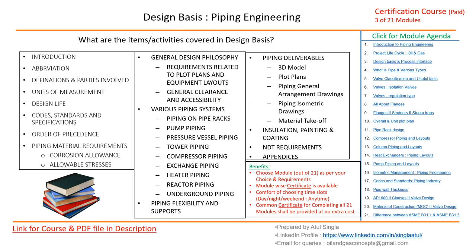General clearances, accessibility, various piping systems — pipe rack, pump piping — and applicable clauses for any process plant will be listed and discussed. Piping flexibility and support, stress design bases, and all project deliverables based on client requirements and contract scope will be listed in the design basis.